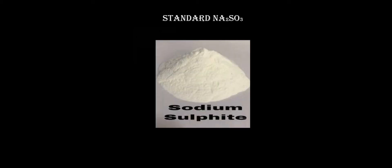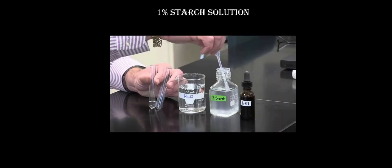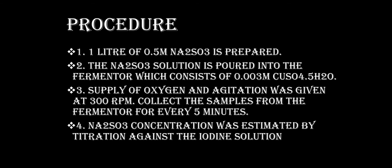The materials required are CuSO₄·5H₂O copper sulphate pentahydrate crystals, standard Na₂SO₃ sodium sulphite powder, 0.1 molar iodine solution, and 1% starch solution. For the procedure, one liter of 0.5 molar sodium sulphite solution is prepared and poured into the fermenter which contains 0.003 molar copper sulphate pentahydrate crystals. Oxygen supply and agitation are given at 300 rpm.